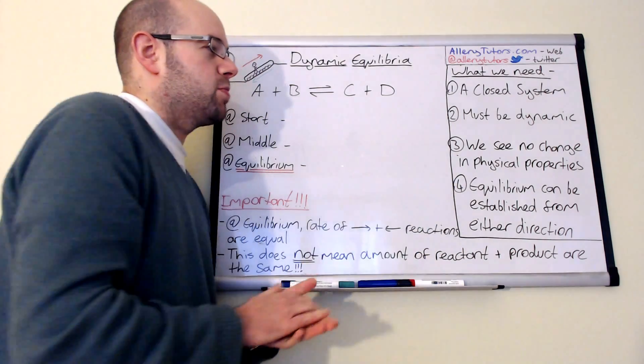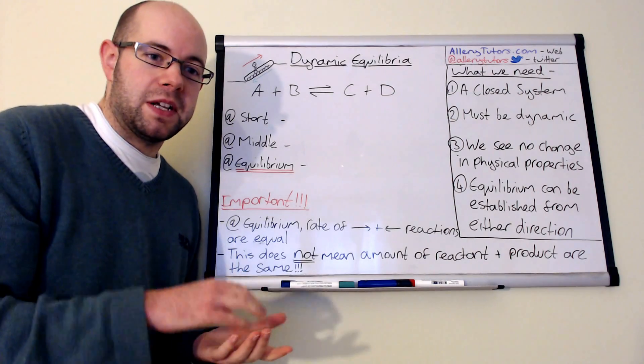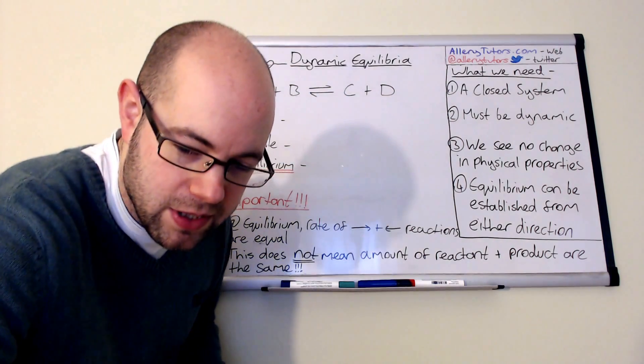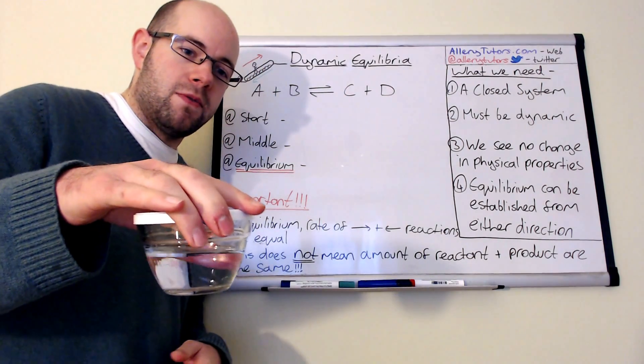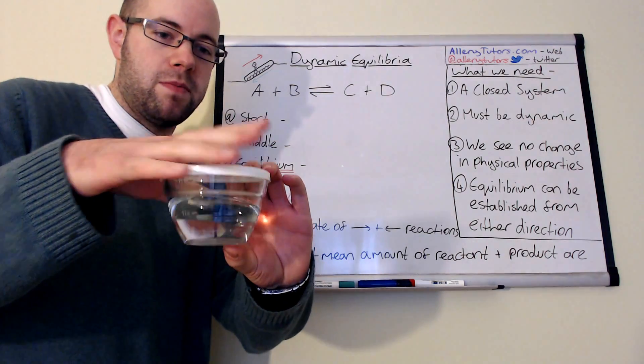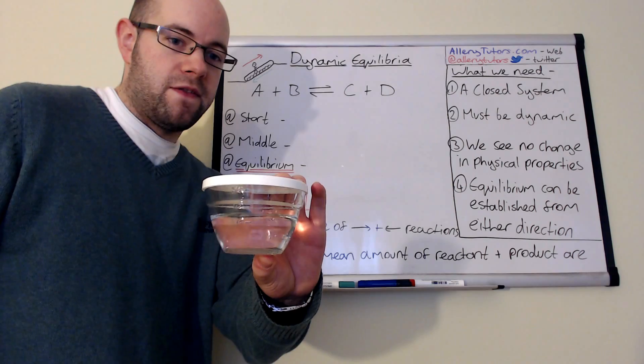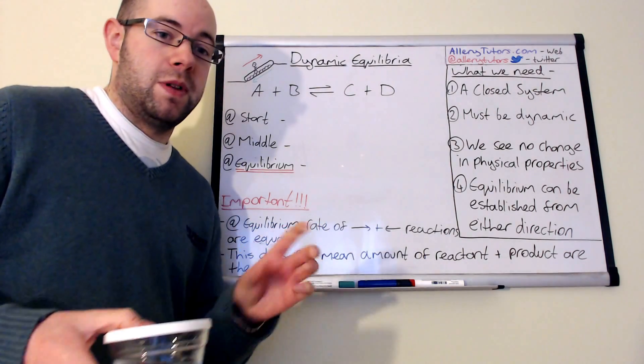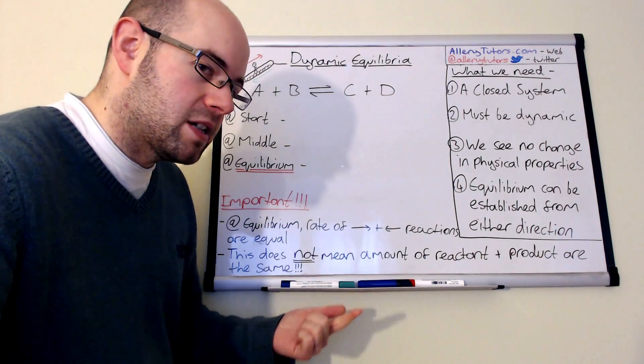The third one is when something is established in equilibrium, so for example like this water here, there is actually an equilibrium reaction happening right now. But when something is in equilibrium, we shouldn't see a change in physical state. So that could mean color, it could mean density.